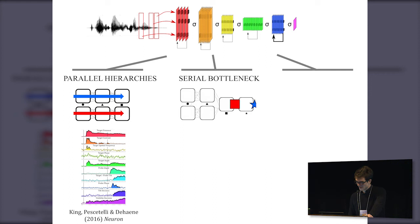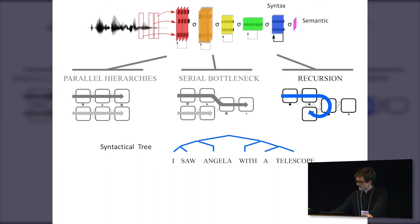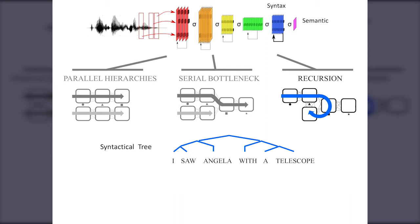I'll focus on recursion, which is very important for language. When we're presented with a sentence, we have to reconstruct a data structure — a tree — and this data structure is nested, because each element of the tree is of the same type. This means we need an algorithm that iteratively reconstructs multiple branches multiple times.